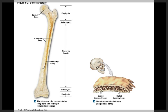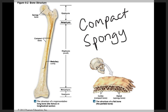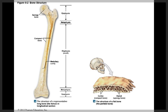All bone tissue is called osseous tissue. There are two different types of bone: compact bone and spongy bone. Compact bone is very dense and relatively solid, and it's located on the surface of bone. Spongy bone, on the other hand, is more cancellous — it has a network of bony plates and struts, so it's not quite as dense or solid, and it is located interiorly.